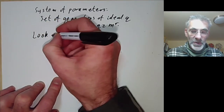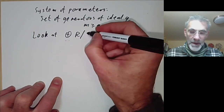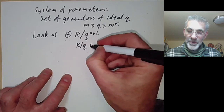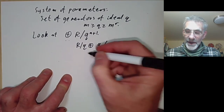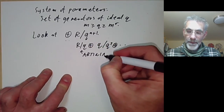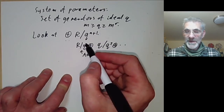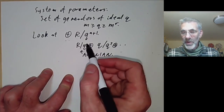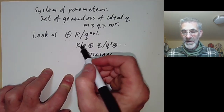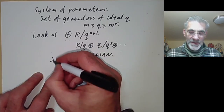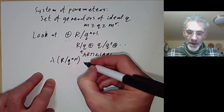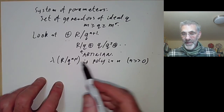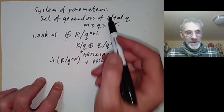What we're going to do is look at the graded ring where we take the sum of R over q to the n plus 1, replacing M by q. This equals R over q plus q over q squared and so on. This is an Artinian ring because q contains a power of M to the r, so it actually has finite length over R. We find that the length of R over q to the n plus 1 is a polynomial in n provided n is sufficiently large. What we want to do is compare the degree of this polynomial with the number of generators of the ideal q.